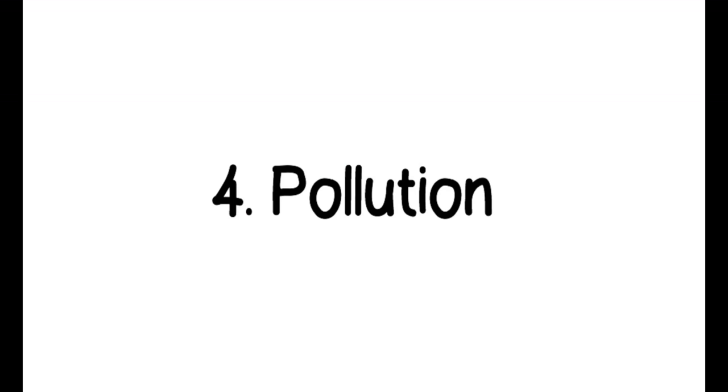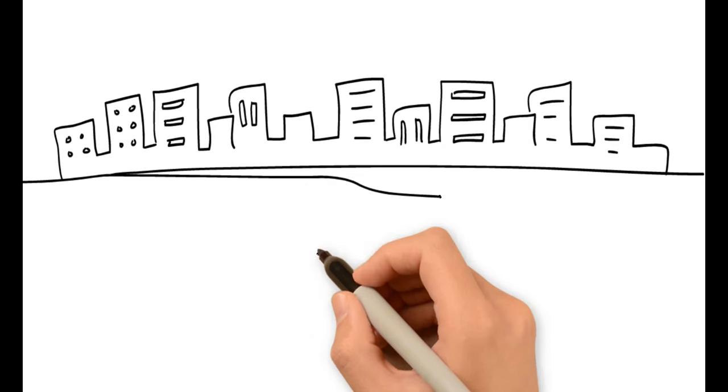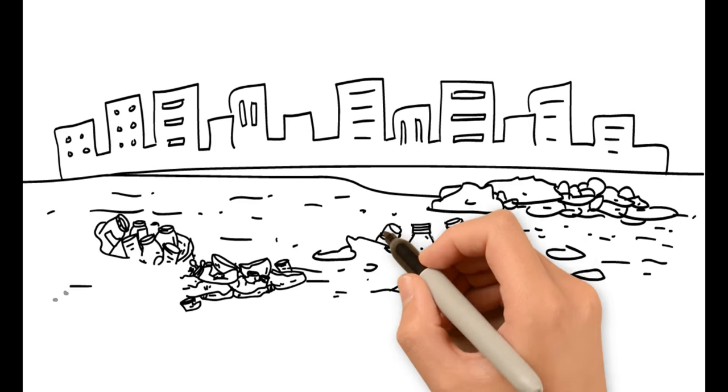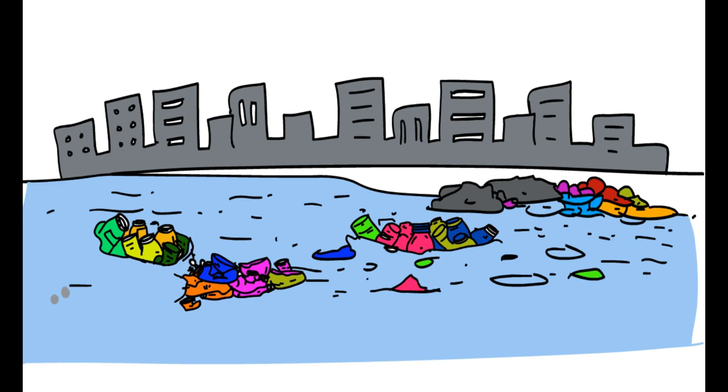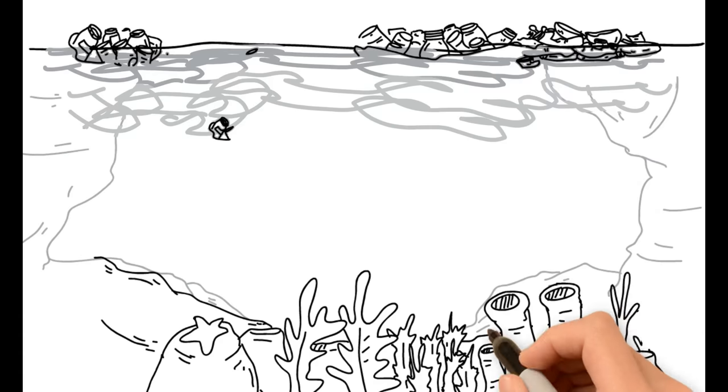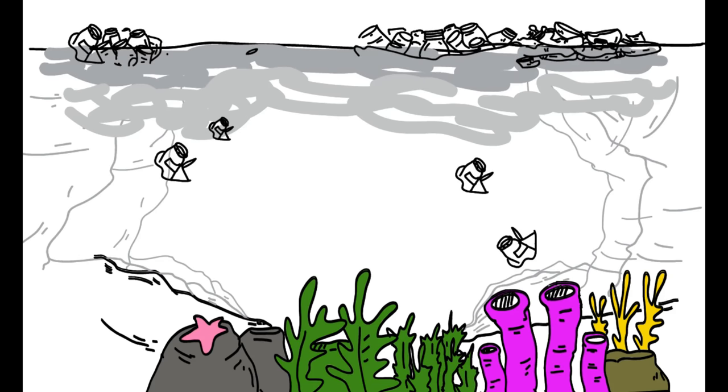4. Pollution. Corals are also stressed out by water pollution. Pollution is caused by ships, as well as chemicals that dissolve from garbage. Pollution also causes the water to become murky, once again challenging the ecosystem of the oceans.